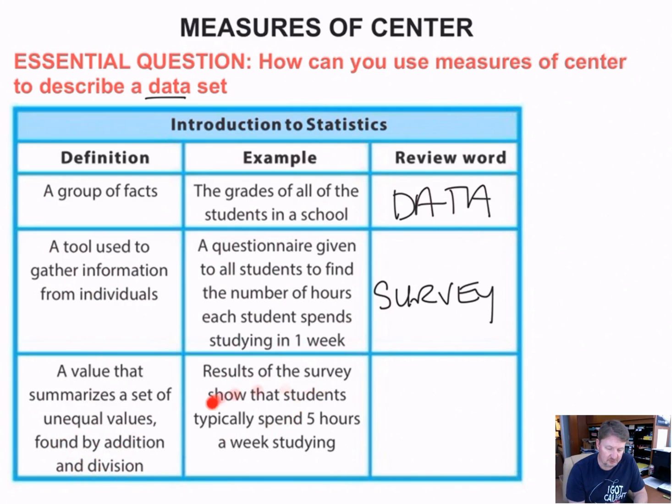The last thing says a value that summarizes a set of unequal values found by addition and division. For example, results of a survey show that students typically spend five hours a week studying. The key word here is typically because we're talking about averages. So those are words you should have learned last year.